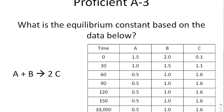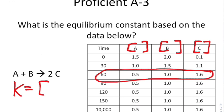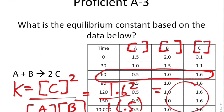For the problem asking for K from graph data, first identify where equilibrium is established on the graph, then read off the equilibrium concentrations of A, B, and C. Writing the expression K equals [C]² divided by [A][B] and plugging in the equilibrium values — C = 1.6, A = 1, B = 0.5 — gives K equals 1.6² divided by 0.5, which is your equilibrium constant.